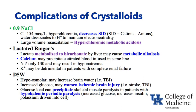Lactated Ringer's: the lactate anion is metabolized to bicarbonate assuming a functioning liver. Large volumes can cause metabolic alkalosis. There is some calcium in lactated Ringer's, so we often avoid giving blood through a line with lactated Ringer's, as the calcium may precipitate the citrated blood being infused. The sodium in lactated Ringer's is only about 130, which can result in hyponatremia. And because it contains potassium, we may avoid lactated Ringer's in patients with complete renal failure, as that potassium could accumulate.